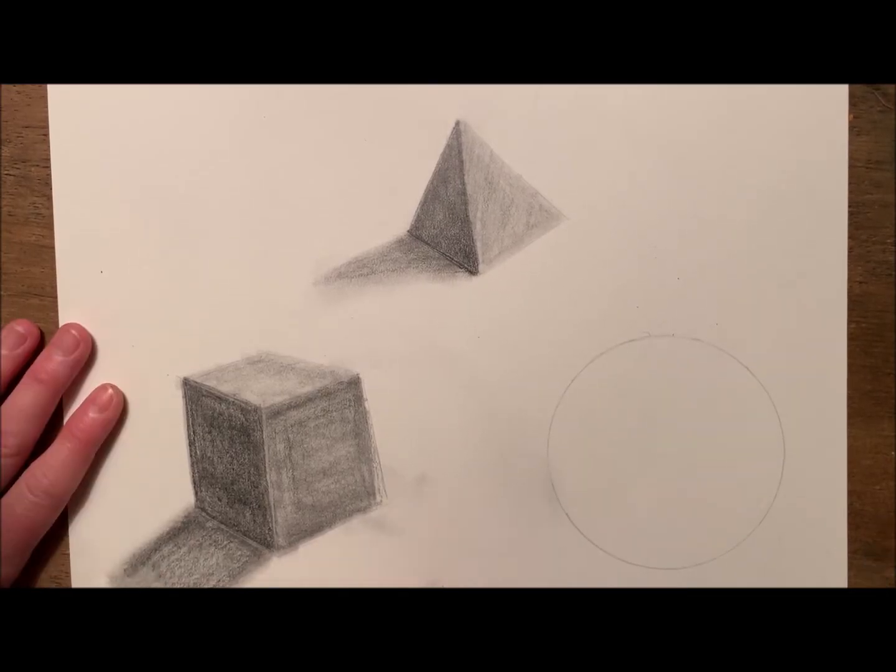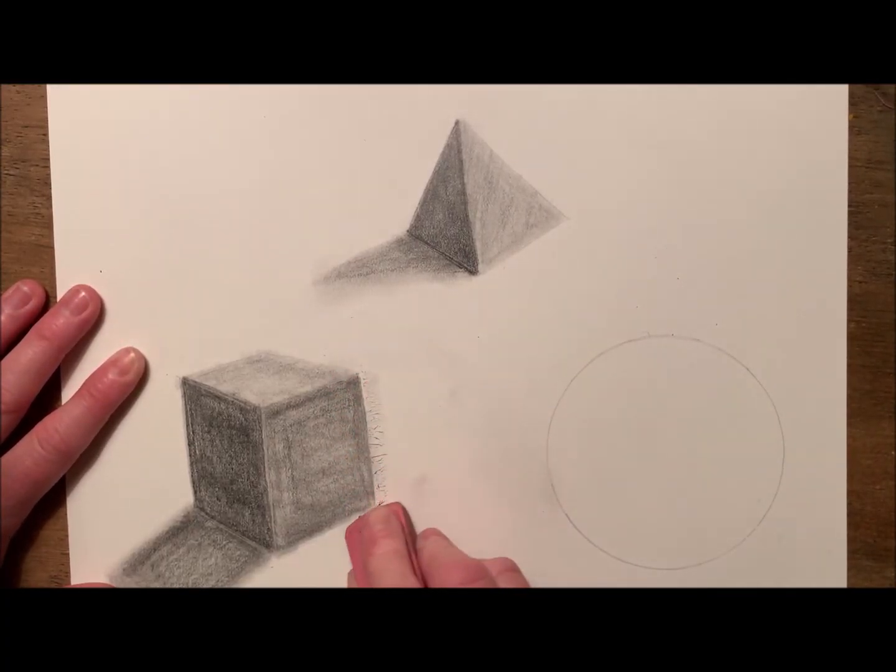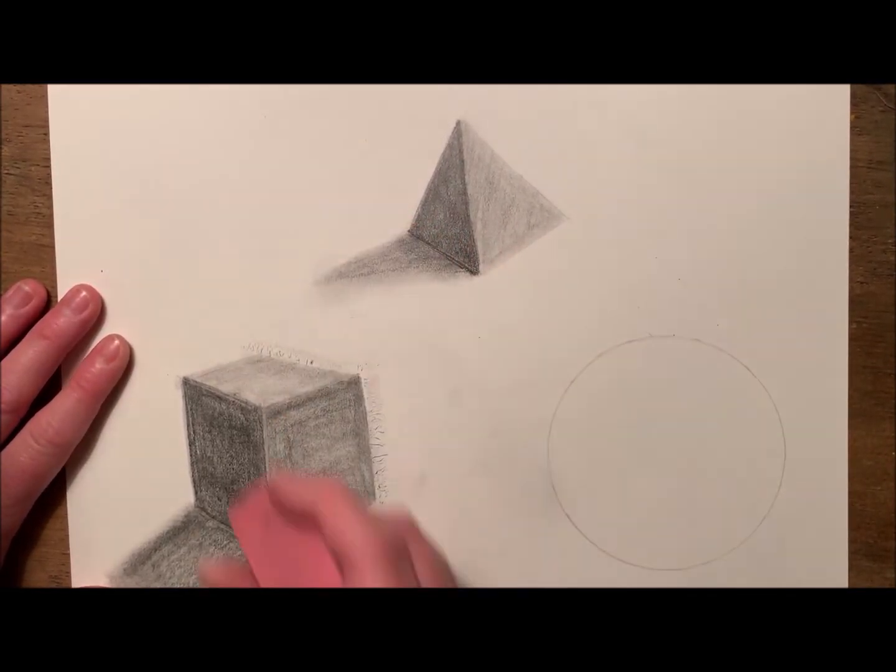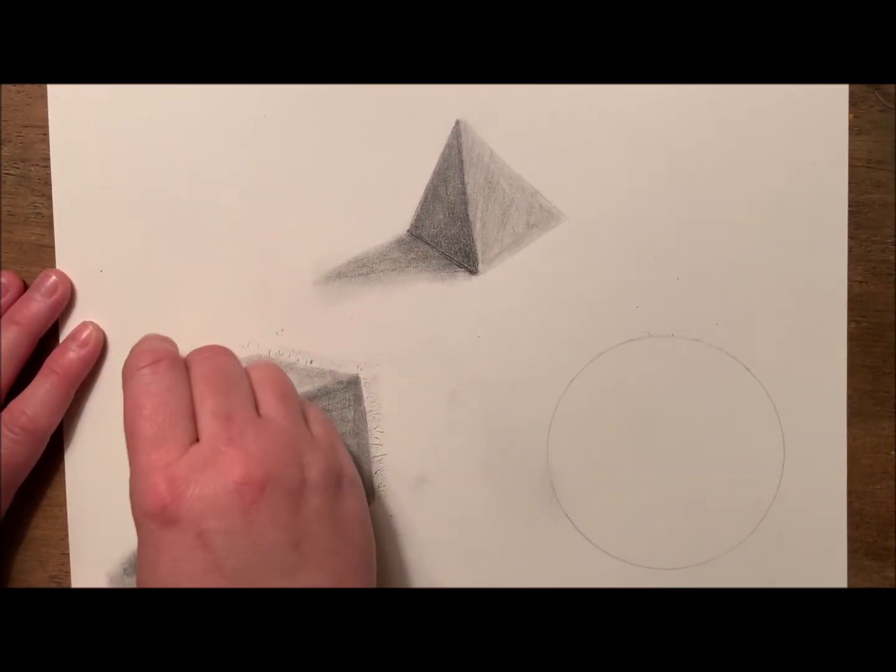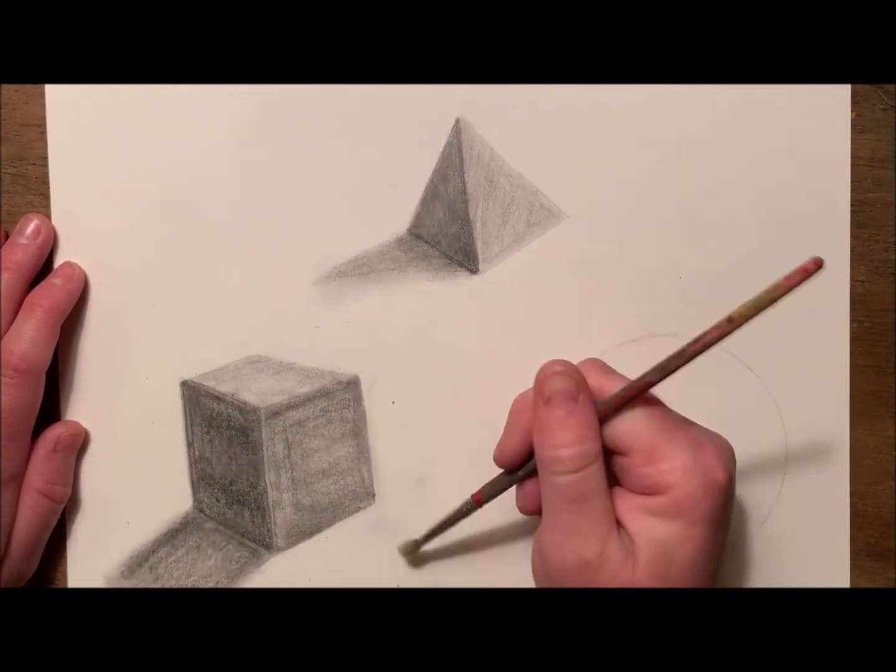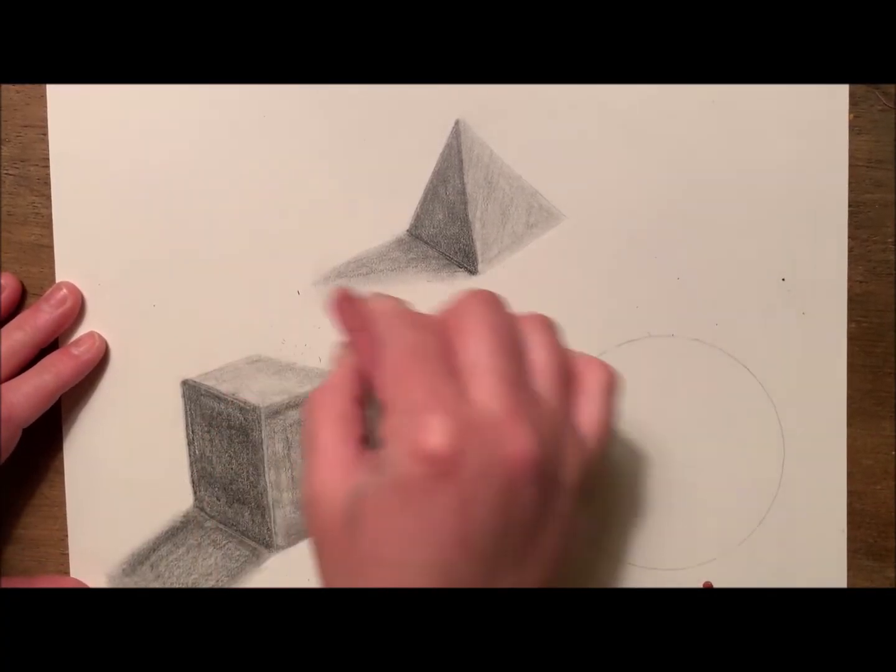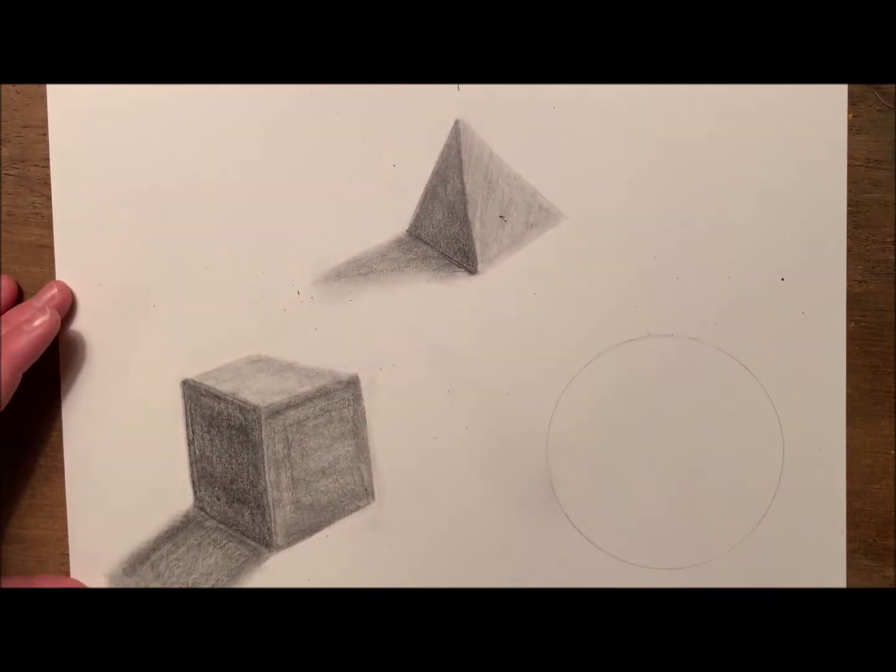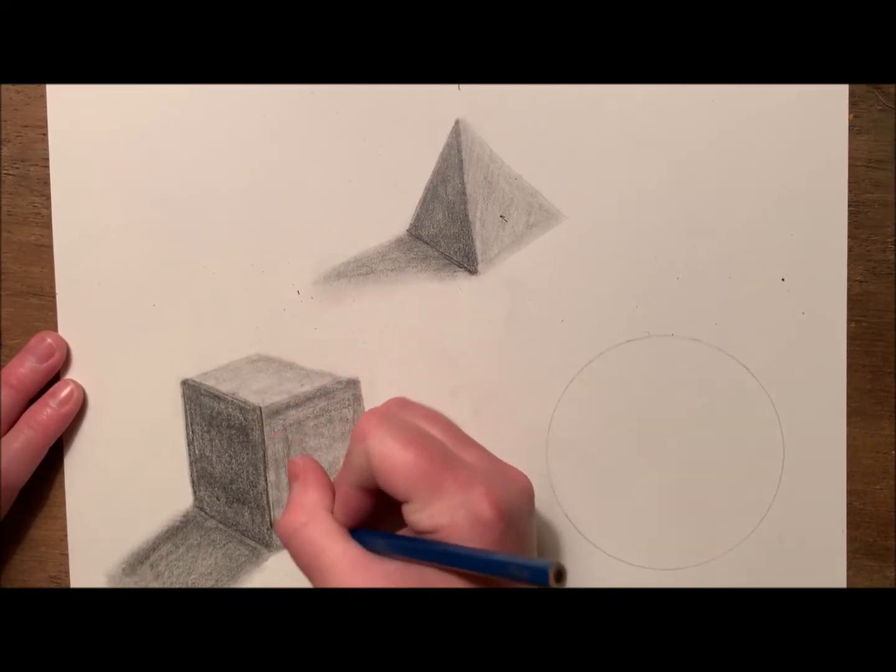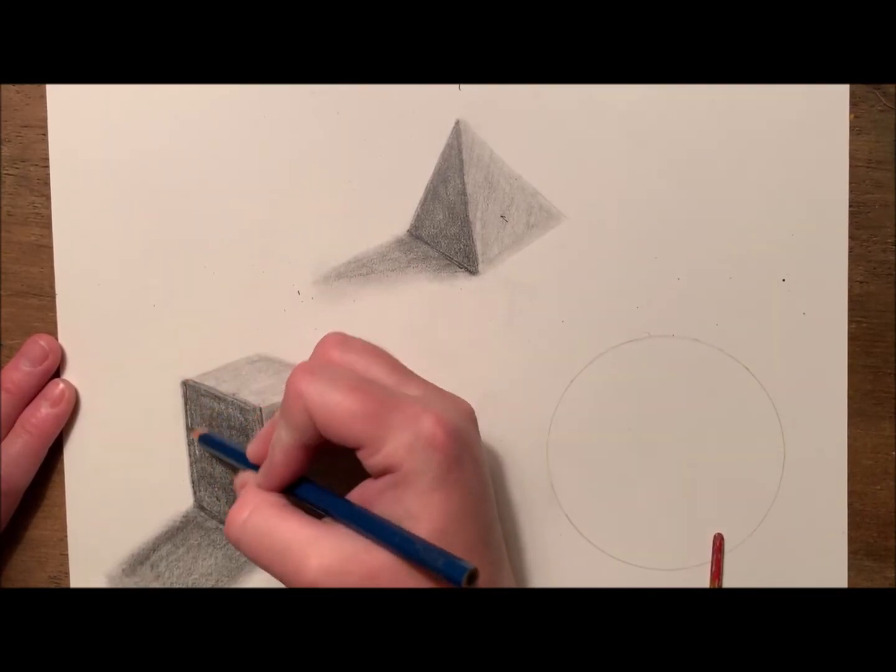I usually make my shadows darker closer to the shape. Now the next step again is to take an eraser and erase up those lines so they are nice and crisp. Now that I finished erasing and refining, it's time to go back with my heavy pencil and redo those edges and outlines to really give my cube a nice crisp look.